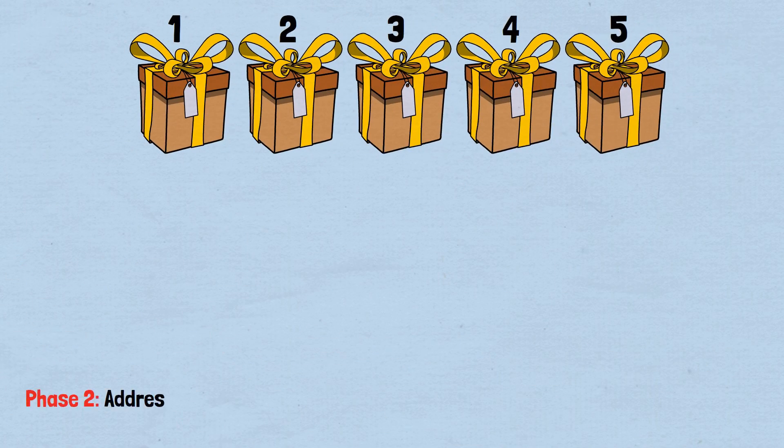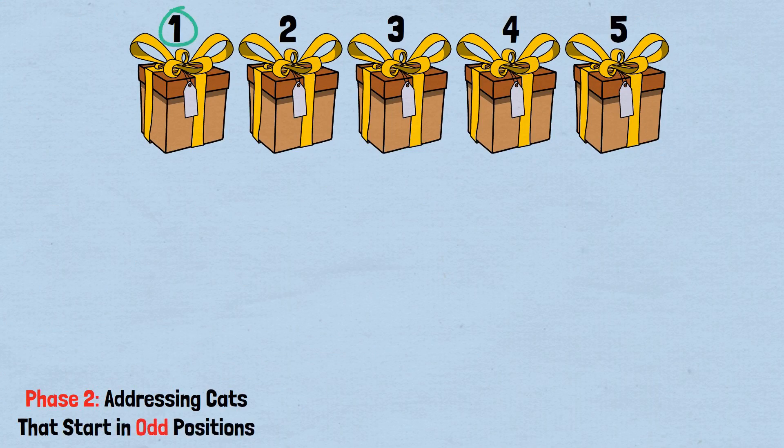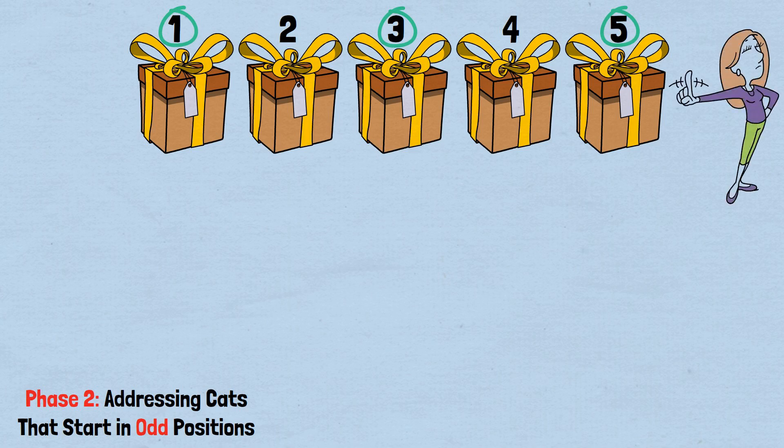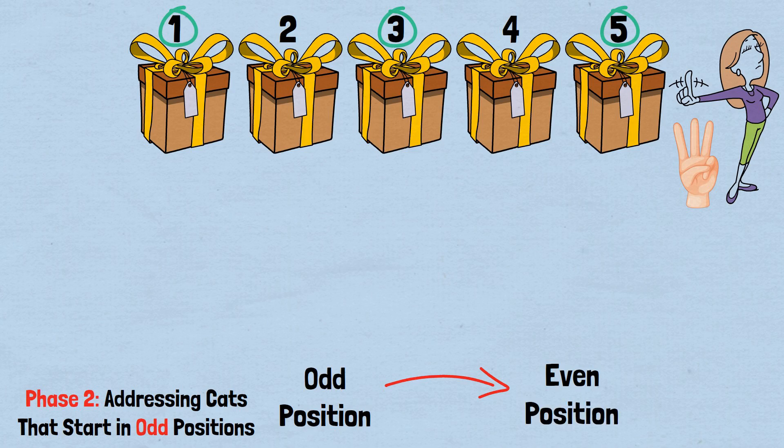Phase 2: Addressing cats that start in odd positions. What if the cat started in an odd-numbered position, box 1, 3, or 5? Our 2-3-4 sequence won't catch it in the first 3 days. However, after 3 days of movement, a cat that started in an odd position will be in an even position. Let's verify this.